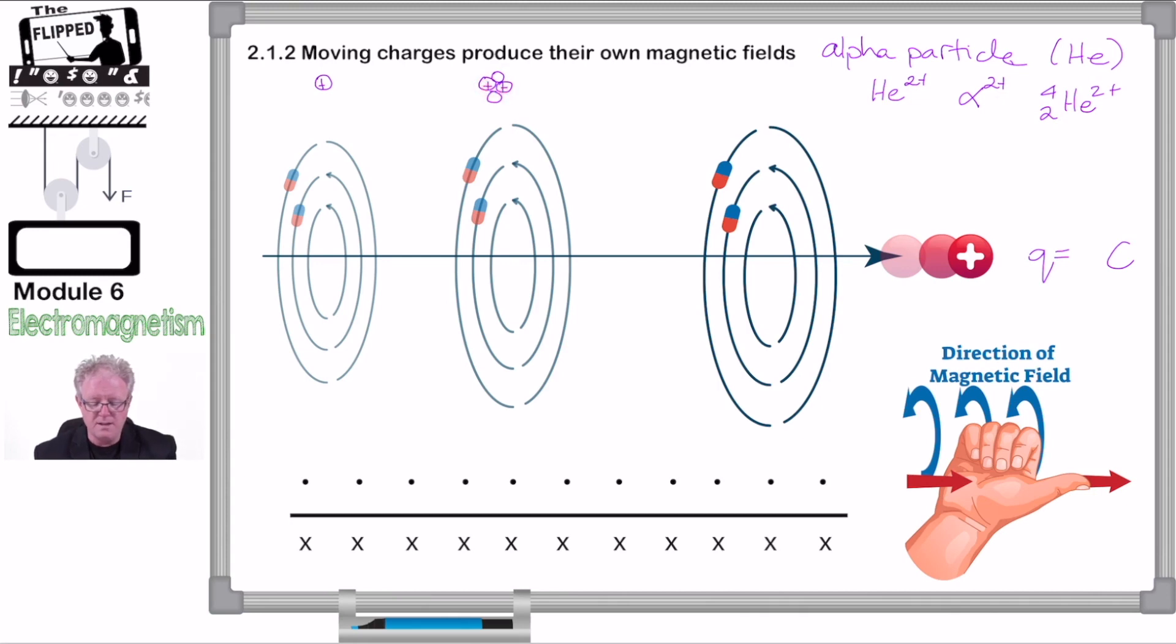And this 4 represents the atomic mass. And this lower number represents the atomic number, the number of protons. So we can have this particle called an alpha particle. And that is another particle that's used in physics a lot. But here we've got a single charge, but it could be a double charge here. It could be 2 pluses. No matter what the charge, however, a moving charge creates a magnetic field.